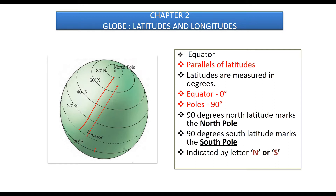The equator represents zero degrees latitude — it is the base latitude at zero degrees. 90 degrees north of the equator marks the north pole, and 90 degrees south of the equator marks the south pole.